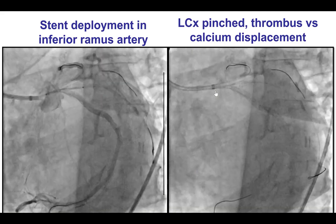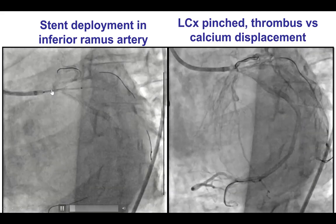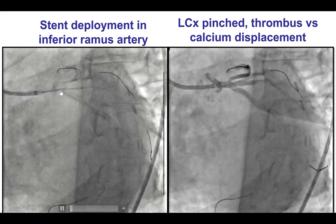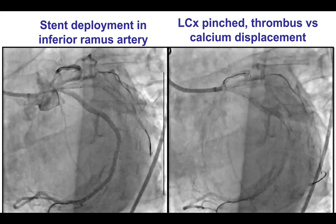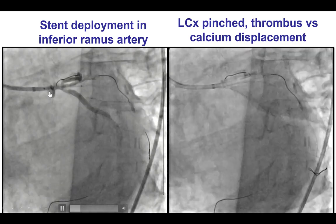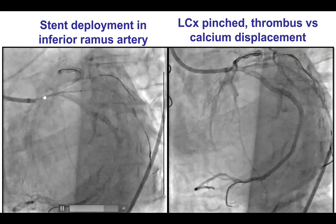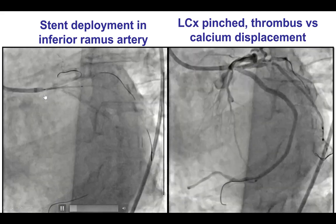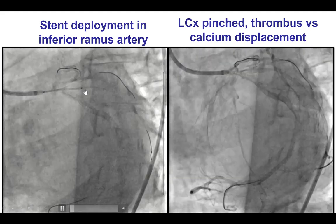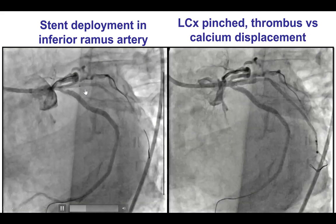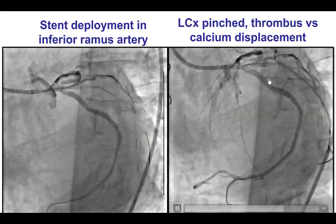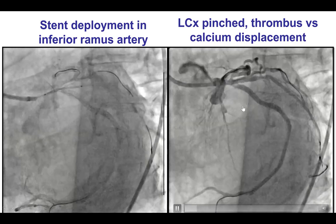The double-kissing crush is a great strategy, but it is time-consuming. Given the hemodynamic issues, it was urgent to obtain good flow in all vessels. Therefore, we changed from DK crush to standard crush. We placed a stent all the way from the ostium of the left main into the inferior Ramus branch, which was deployed and provided good flow into that Ramus branch.